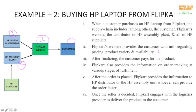After finalizing the product, the customer pays for it — this is the flow of funds in the opposite direction. After the order is placed, Flipkart provides the order information to different sellers to check which seller can deliver the product faster. Flipkart then engages with a logistics provider — that is again the flow of information. After the seller is decided, it provides the logistics partner with information about where the order is to be picked up and delivered, and finally through the logistics partner, the product is delivered to the customer — this is the flow of product.